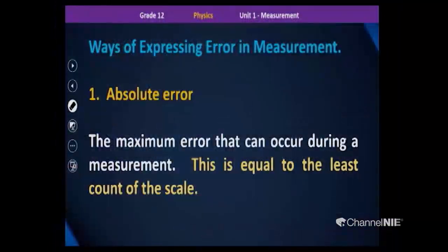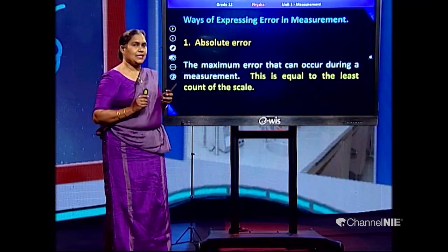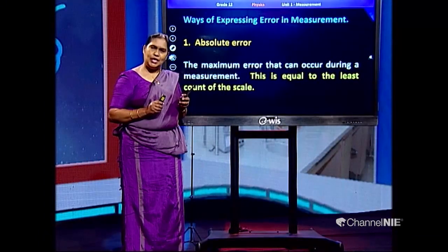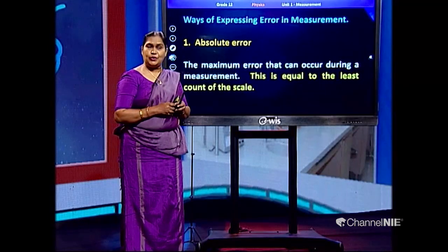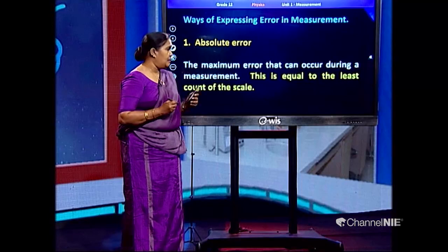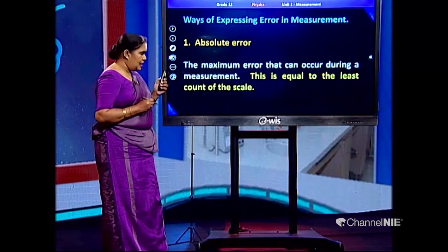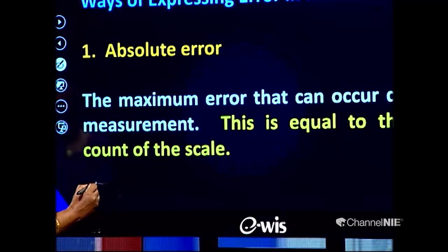The first one is called the absolute error. The absolute error is the maximum error that can occur during a measurement. This is equal to the least count of the scale. Do you know the meaning of least count? Without knowing that, you would not be able to understand the meaning of absolute error. I am going to draw a scale here, graduated using line segments — 1, 2, 3, 4, 5.